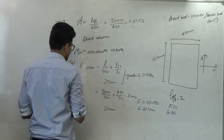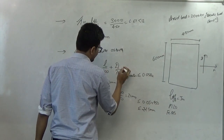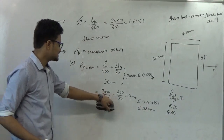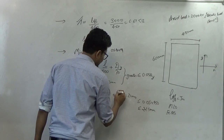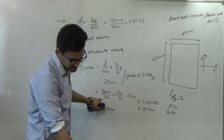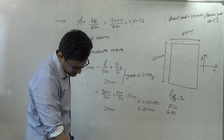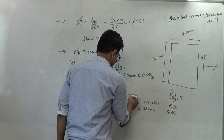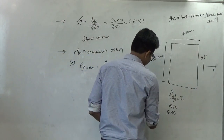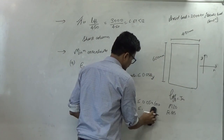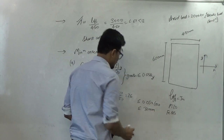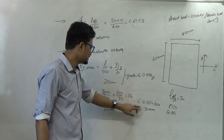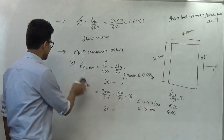Now we check Ey minimum in the y-direction. The greater of L/500 plus dy/30 or 20 mm should be less than 0.05dy. Solving: 3000/500 plus 600/30 equals 26 mm, and 0.05 into 600 equals 30 mm. The greater value is 26 mm, which is less than 30 mm, so the minimum eccentricity criteria of IS456 is satisfied in the y-direction as well.